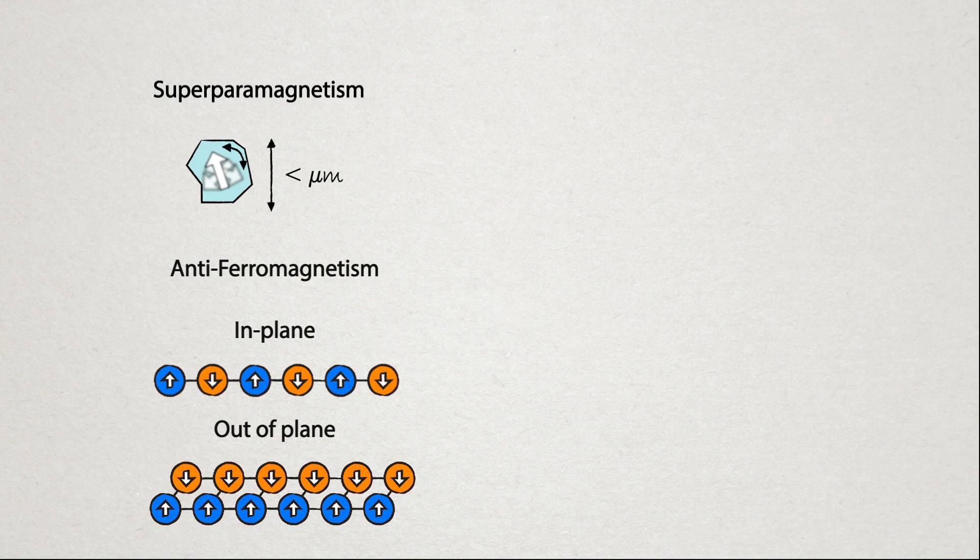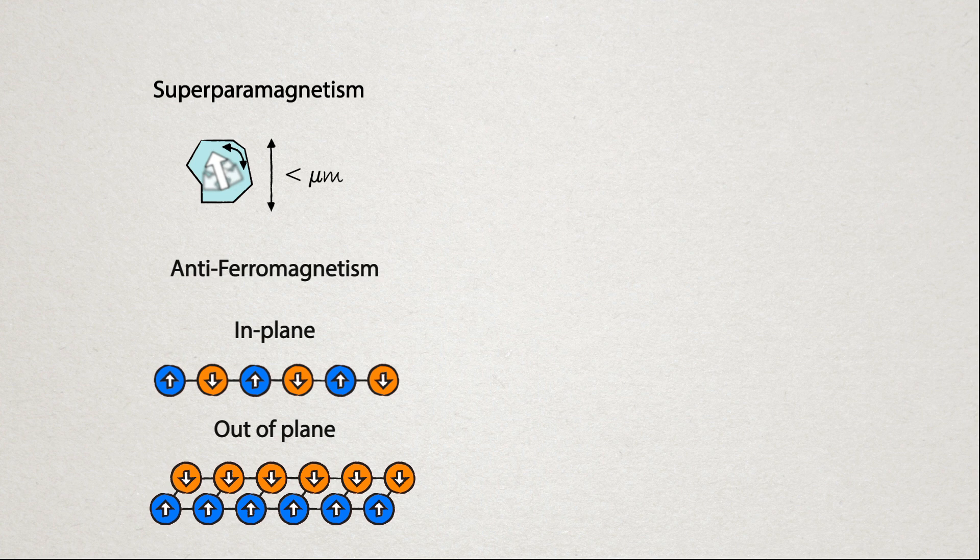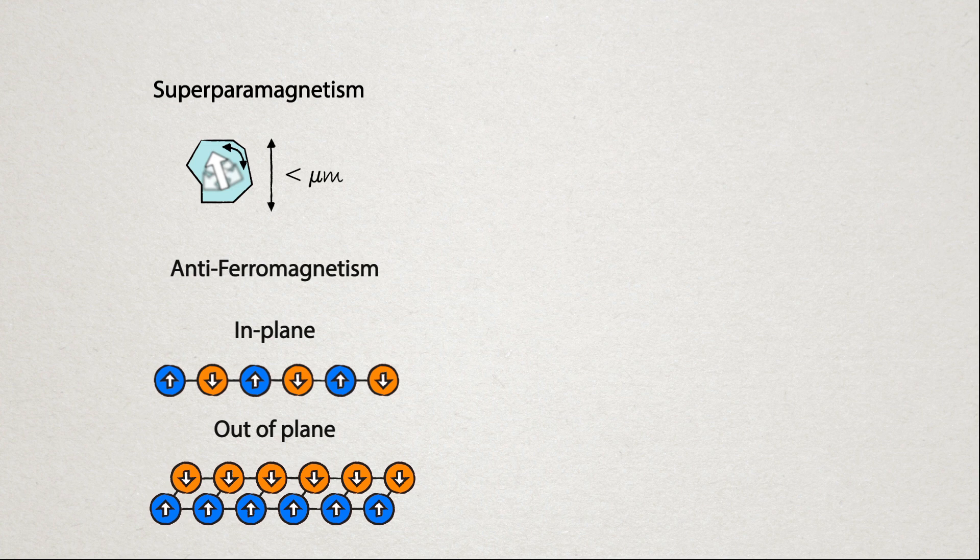This can vary in the way that it forms, depending on in-plane or out-of-plane anti-ferromagnetism. This leads to only atoms that are on the edge of the material contributing to the magnetic field, so they act as if there's only a single layer of atoms that is magnetic.